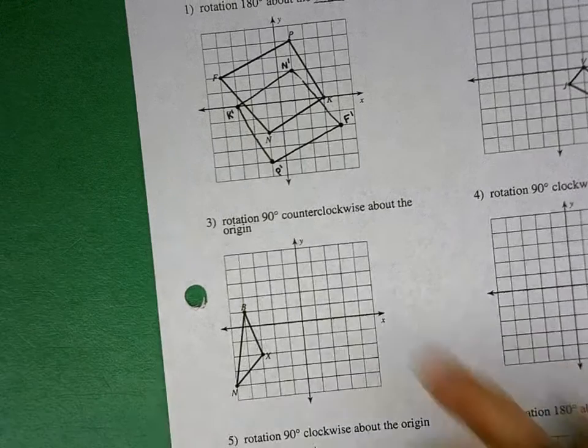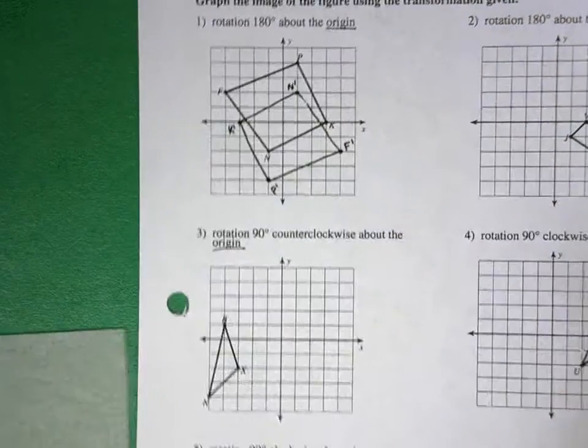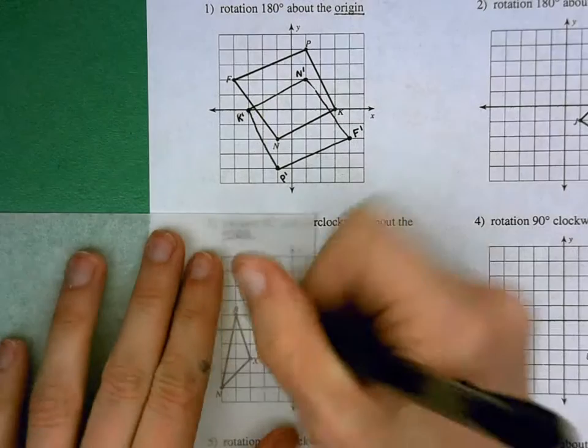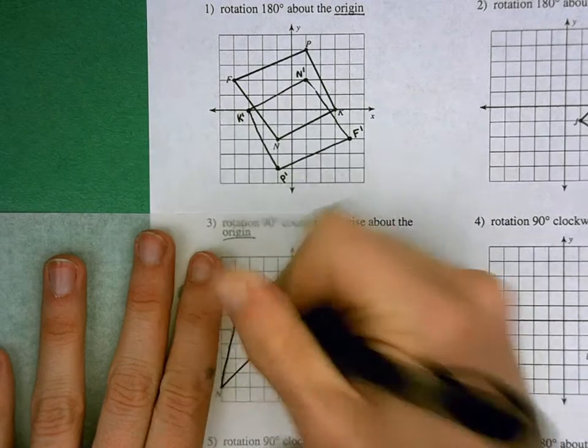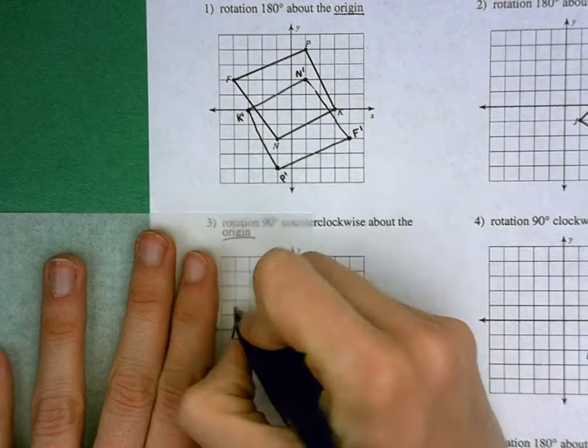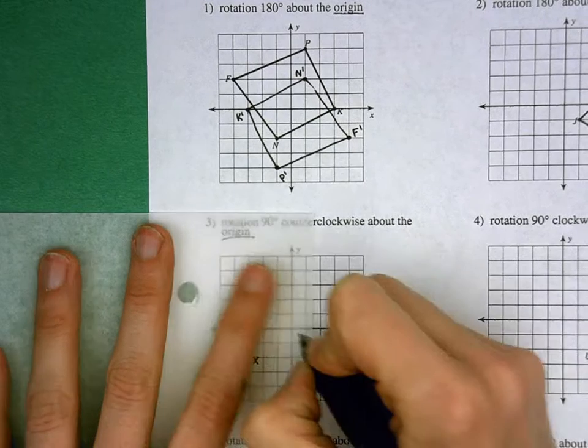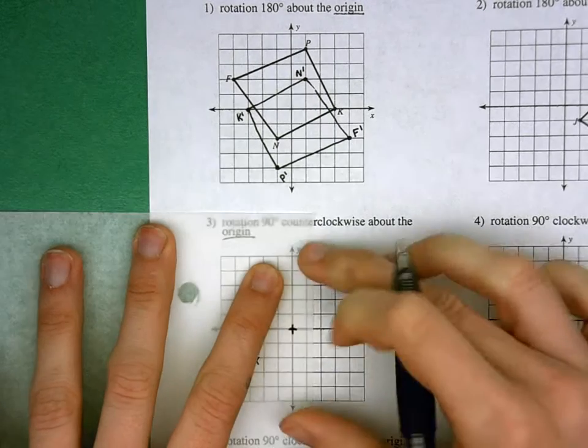We're going to go ahead and do one more. We're rotating 90 degrees counterclockwise about the origin, so that's where my marker is going to go again. I'm going to go ahead and line this up, trace in my shape, and label my points. So this is b, x, and n. And I'm going to go ahead and draw in my marker carefully right on that origin, right where they intersect.